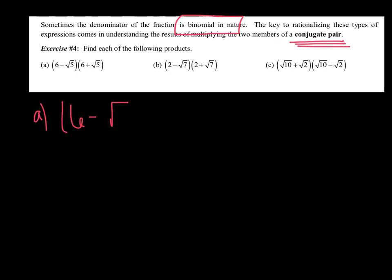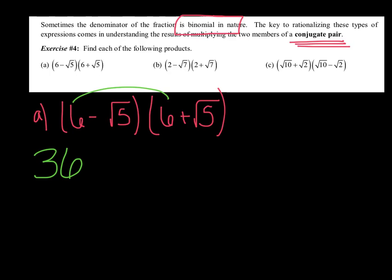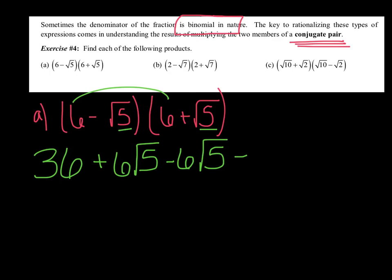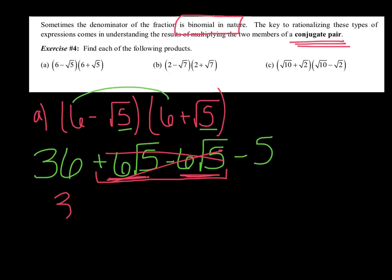Let's compute (6 − √5)(6 + √5). Hopefully your gut is saying FOIL. The firsts get us 36. Then I get a positive 6 radical 5 minus a 6 radical 5 — those two middle terms are one positive and one negative, and they're the same, so they cancel out to 0. And radical 5 times radical 5 is just 5. So I get 36 minus 5, which is just 31.